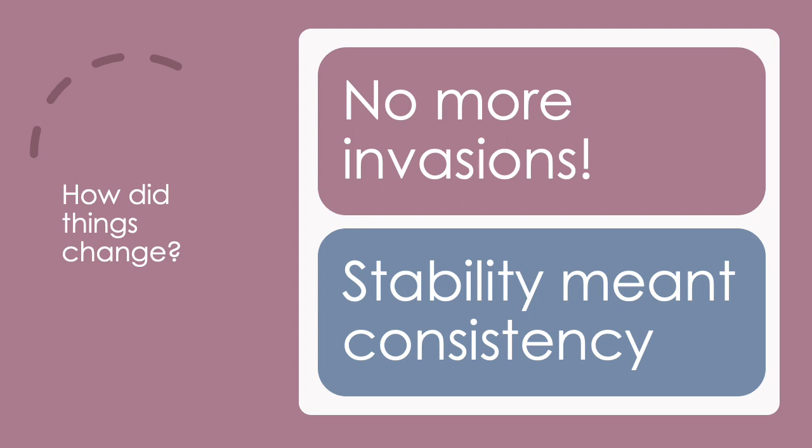What that meant was the language that we'd established — the language that we were speaking with all that mixture of words from different countries — the language was able to stabilize. If you think about when you learned to ride a bike and you had stabilizers on the side, what they do is they keep the bike steady and stable. So with no more invasions, the language that had come to be known as English was able to stabilize. It stayed very steady and words didn't change so often.